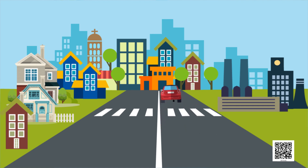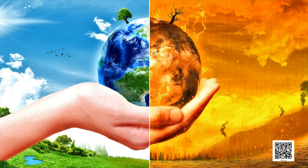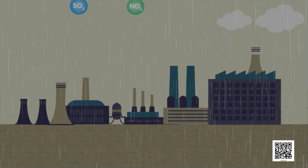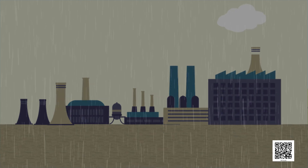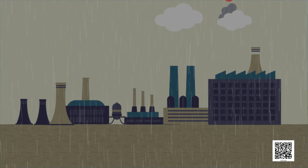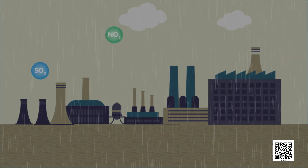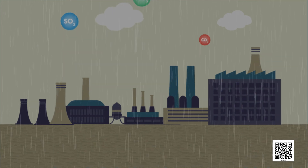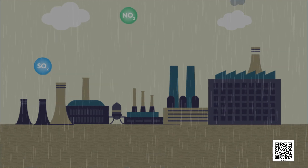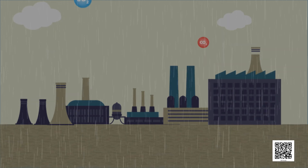Combustion of most fuels releases carbon dioxide into the environment. Increased concentration of carbon dioxide in air is believed to cause global warming. Burning of coal and diesel releases sulphur dioxide gas, which is an extremely suffocating and corrosive gas. Moreover, petrol engines give off gaseous oxides of nitrogen.